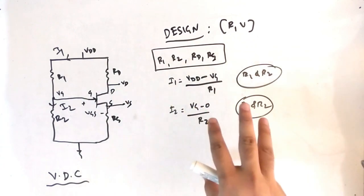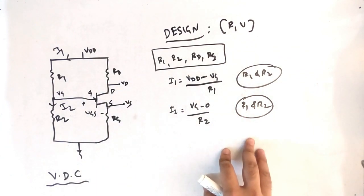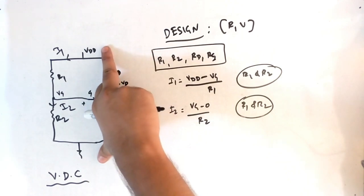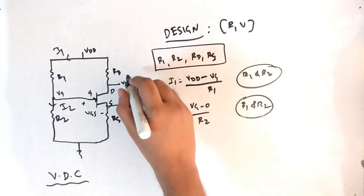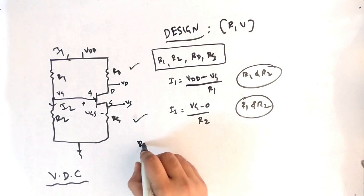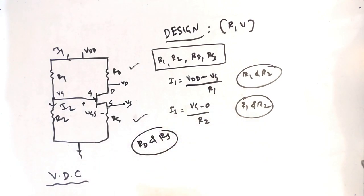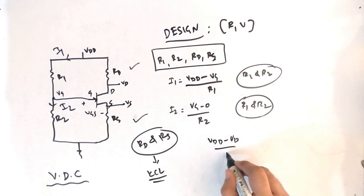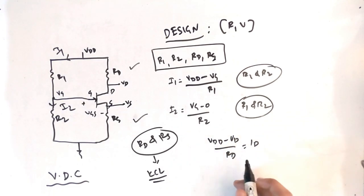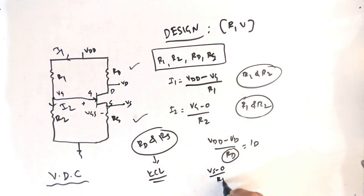There are many such tricky ways to find R1 and R2, for example with dual voltages or three power supplies — there can be a variety of questions, which I will cover in future videos. To find RD and RS, apply KCL: for RD, (VDD minus VD) divided by RD equals ID; for RS, (VS minus 0) divided by RS equals ID. So KCL is the key to find the value of resistances.